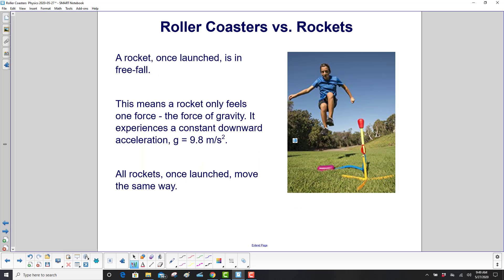A rocket, once launched, is in freefall. Even when it's going up, it is still in freefall. Why?